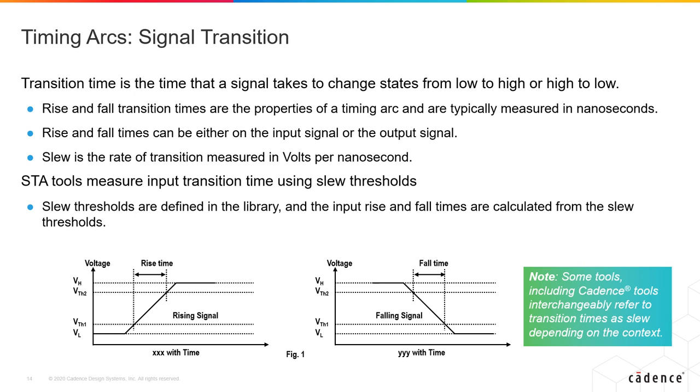Usually, rise time and fall time are measured between 10 and 90% or 20 and 80% of your input signal or your output signal and calculated as rise times or fall times. Technically, the rate of transition is measured in volts per nanosecond and is called slew.